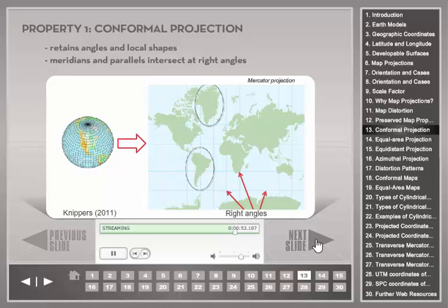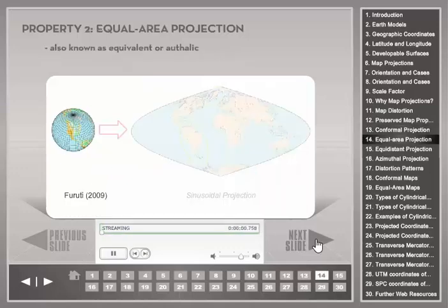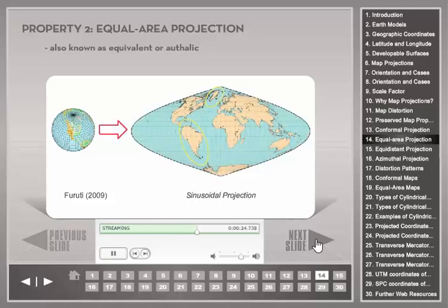For example, Greenland appears to be larger in the map but is only one eighth the size of South America on the globe. As demonstrated here, shapes and correct relative sizes cannot be retained at the same time. An equal area projection, also known as equivalent, preserves the relative size of areas. Given any two regions A and B on the globe, the ratio of size A to size B is retained in the map. An example is the sinusoidal projection, where shape distortions increase toward the pole but the relative sizes of areas are shown correctly, as illustrated for South America and Greenland.